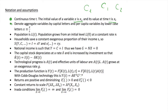We denote aggregate variables by capital letters and per capita variables by lowercase letters. So lowercase x equals uppercase X divided by labour. For example, capital per capita equals total capital divided by labour.